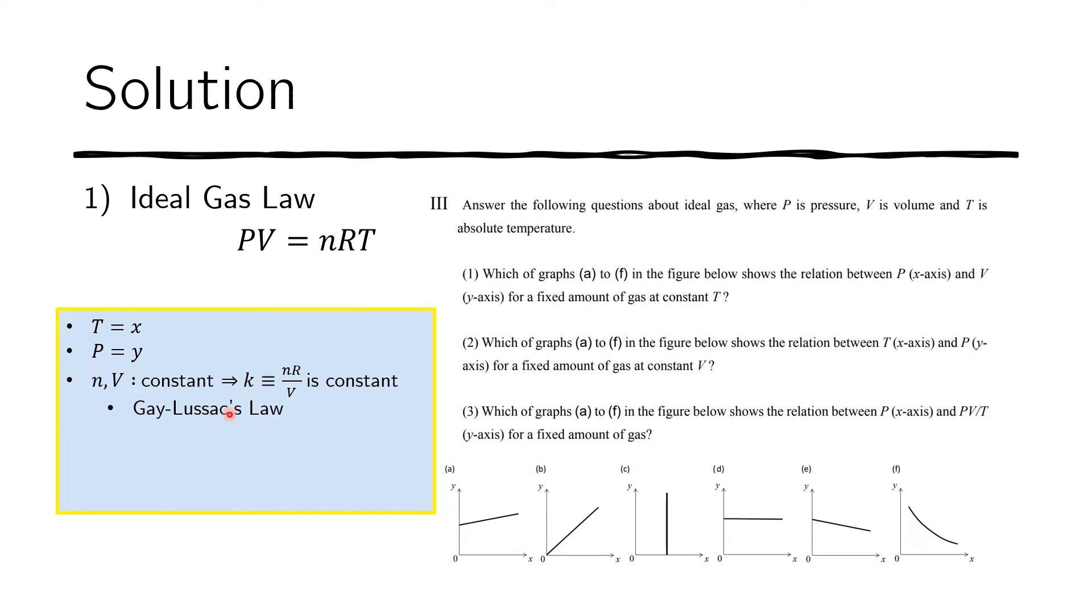And that is the law that gives you the relationship between pressure and temperature, given that all the other variables are constant. Again, you don't need to know this to solve this problem. And now we replace P with y, because P equals y. So P is replaced by y. And then V is constant. So let's keep it there. And then n is constant.